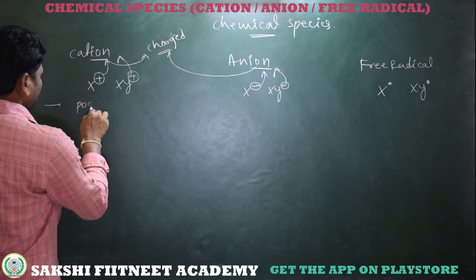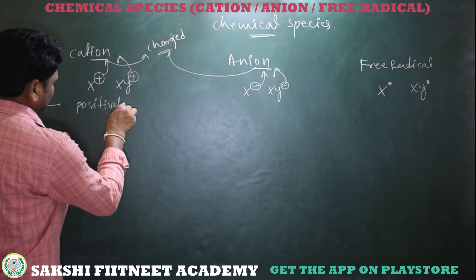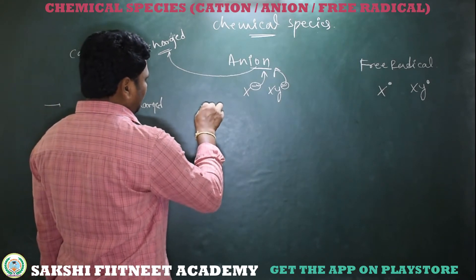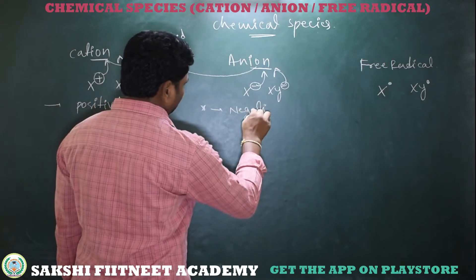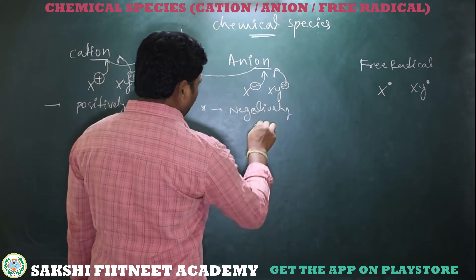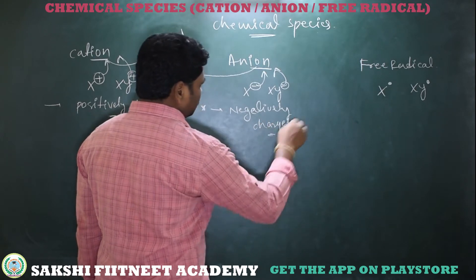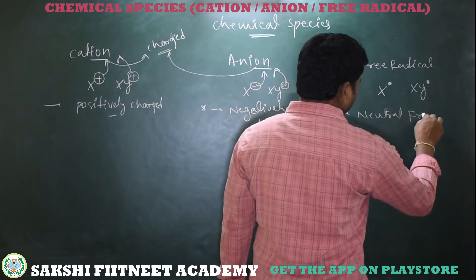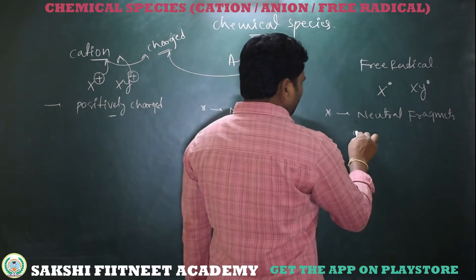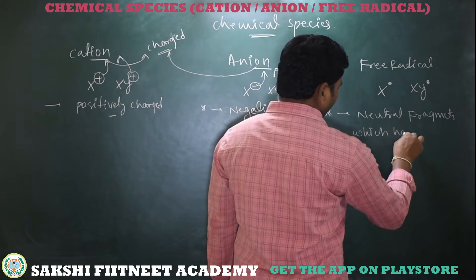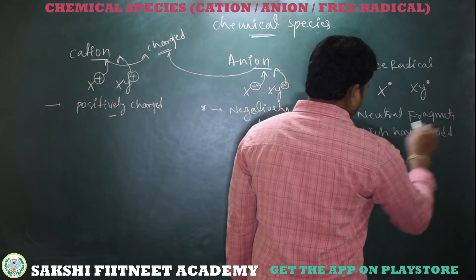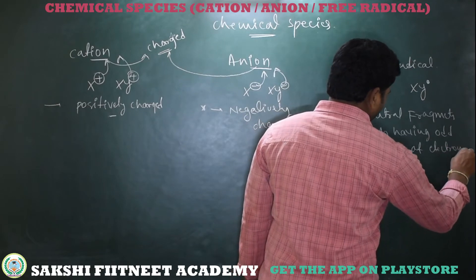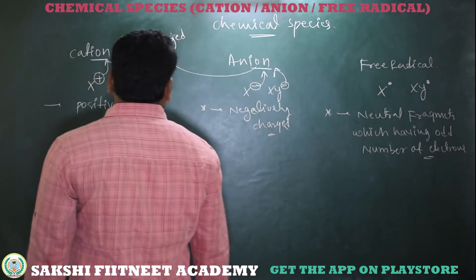So simply: cation is positively charged, anion is negatively charged, and free radical is a neutral fragment or neutral species which has an odd number of electrons — called free radicals.